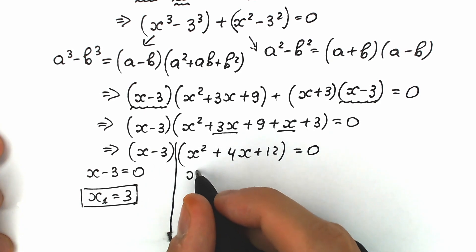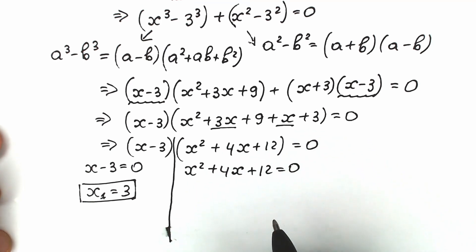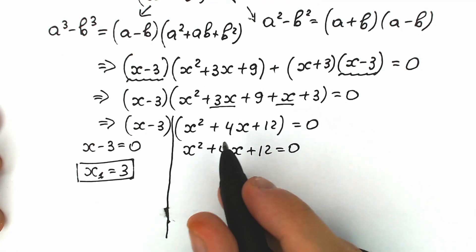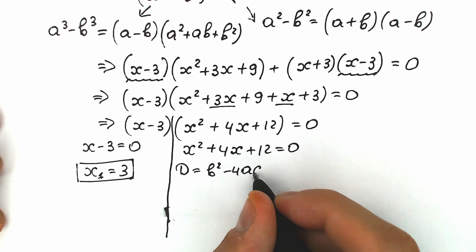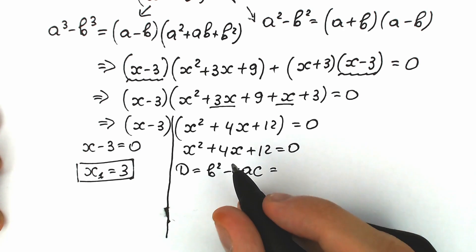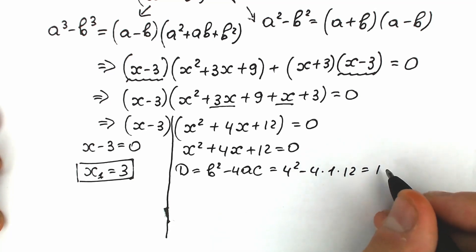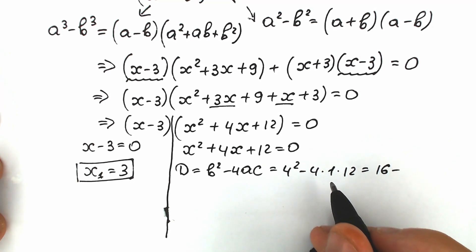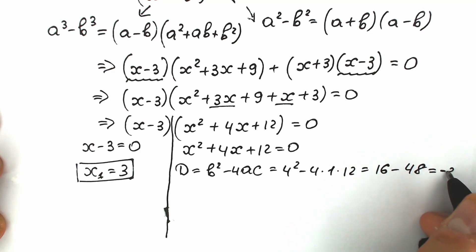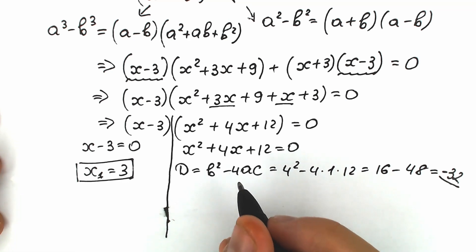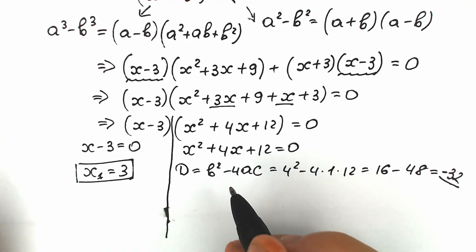Let's find those extra roots from the second factor: x² + 4x + 12 = 0. We calculate the discriminant: D = b² - 4ac = 4² - 4(1)(12) = 16 - 48 = -32. Since the discriminant is negative, this gives us two complex roots.